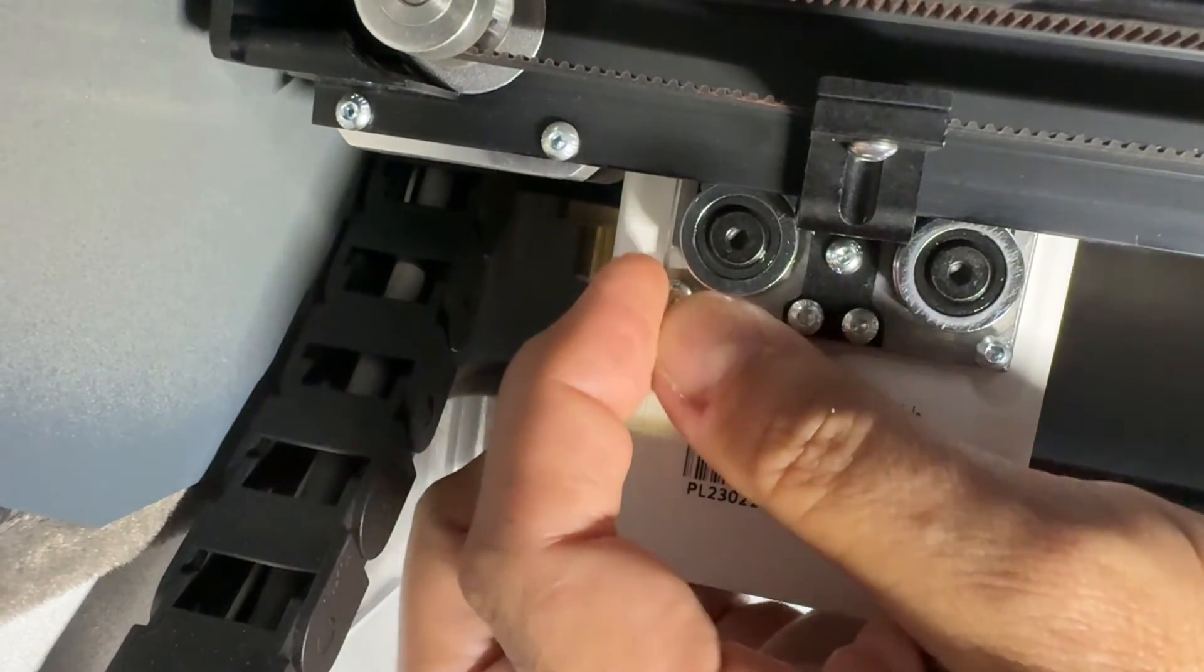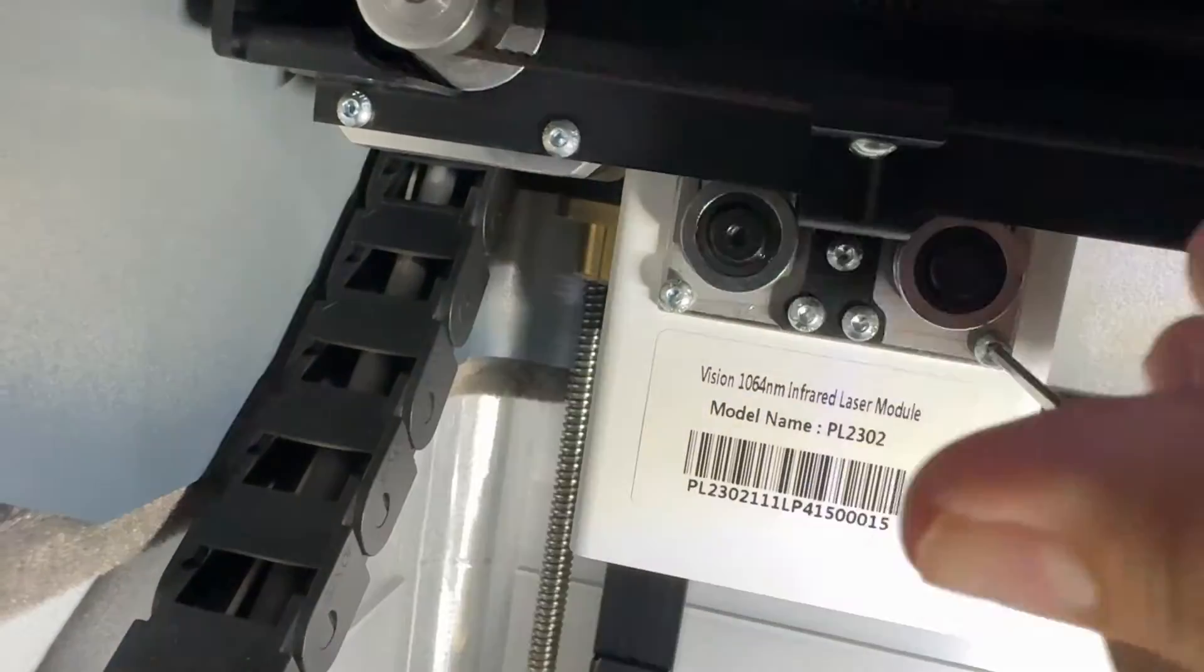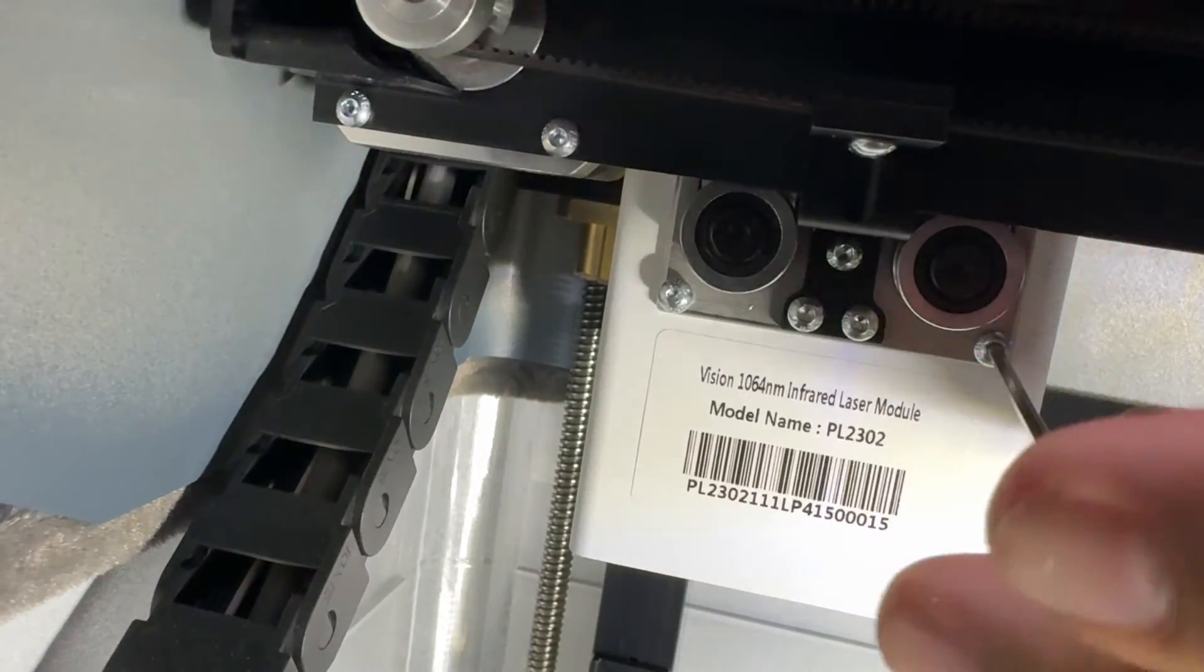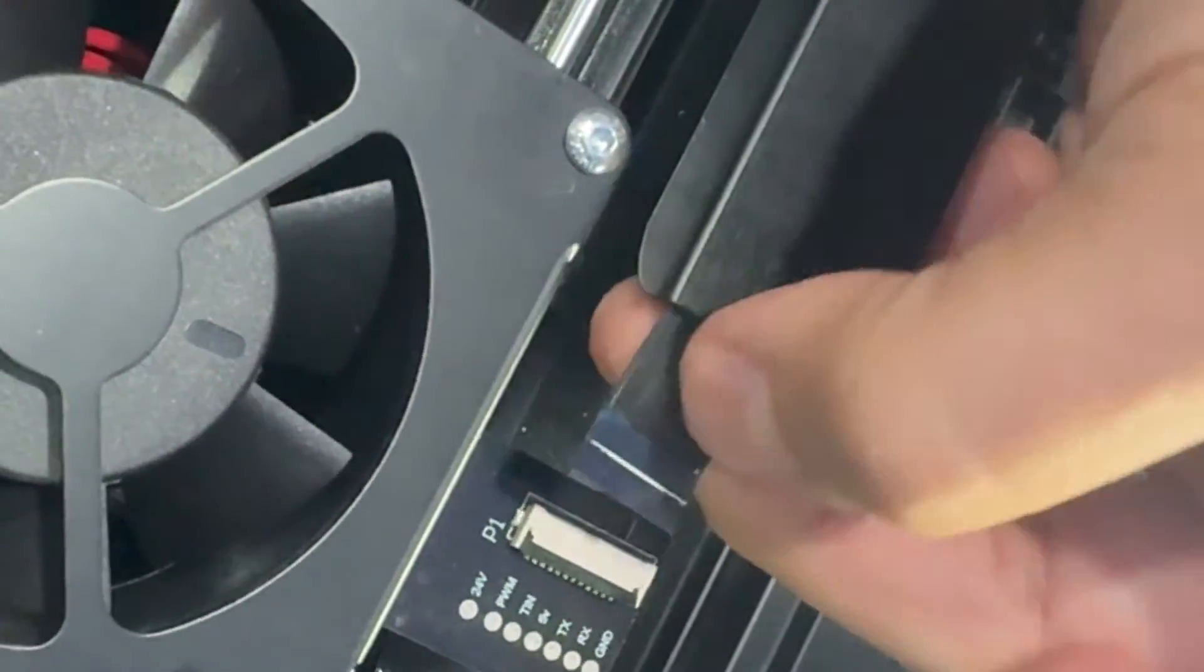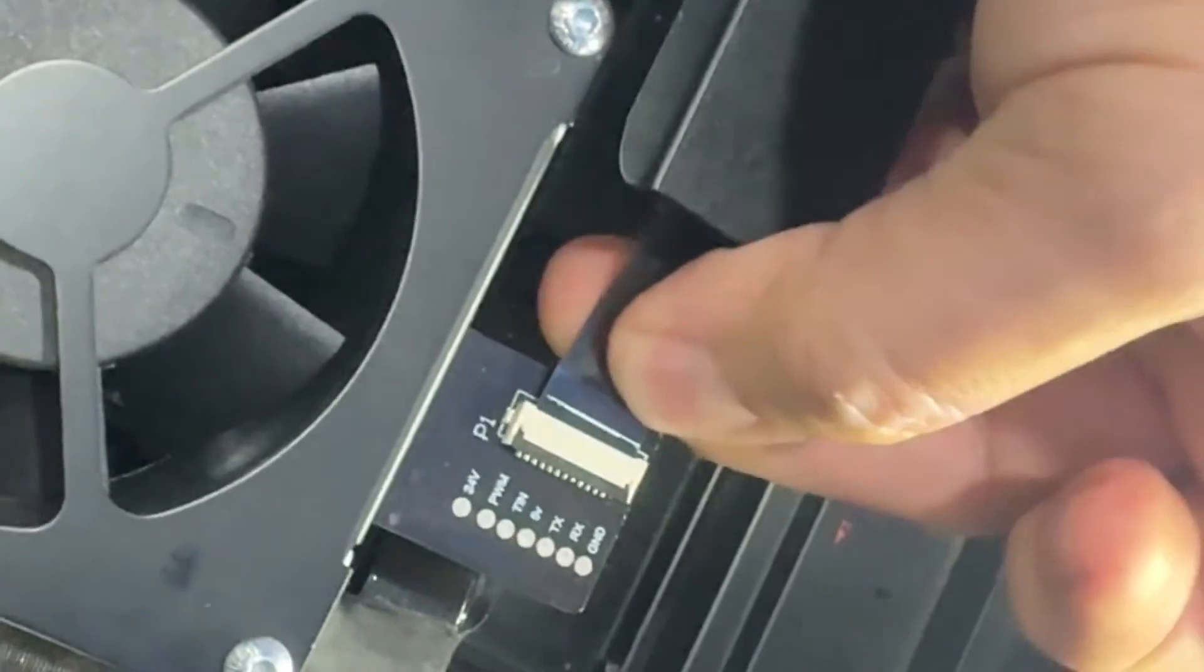You do want these all in there and you want it pretty tight for alignment purposes. Otherwise, your laser module is going to wiggle all over the place and that's not good. It's not going to be accurate. And then the other ribbon cable that we took out, the first one, just slide that. That is the same board that was there before.